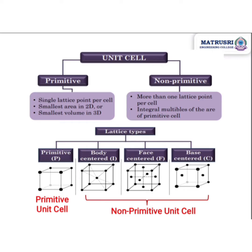Unit cells are further classified into two types: one is primitive unit cell and another one is non-primitive unit cell. Primitive unit cell means the lattice points must be only at the corners — a single lattice point per unit cell. Non-primitive means it should have more than one lattice point per unit cell.